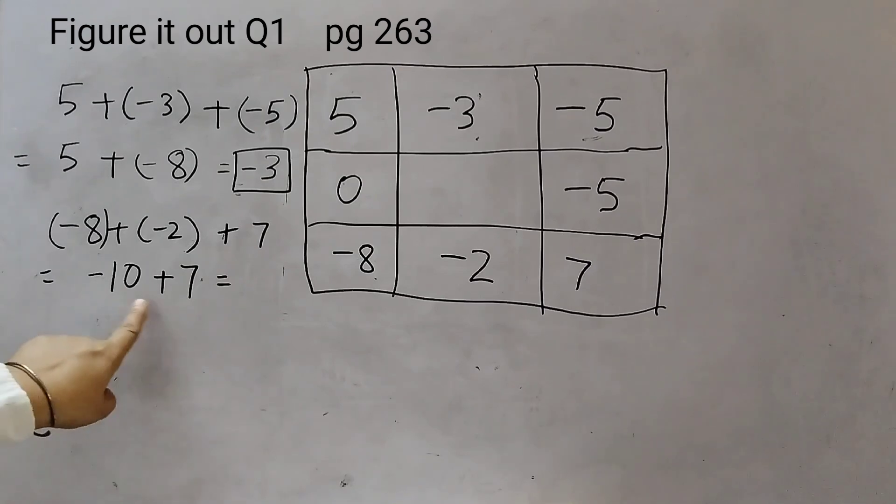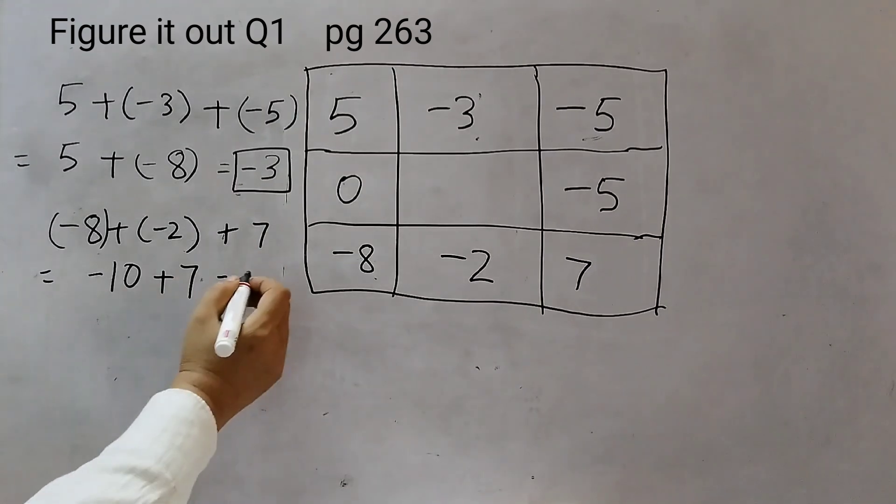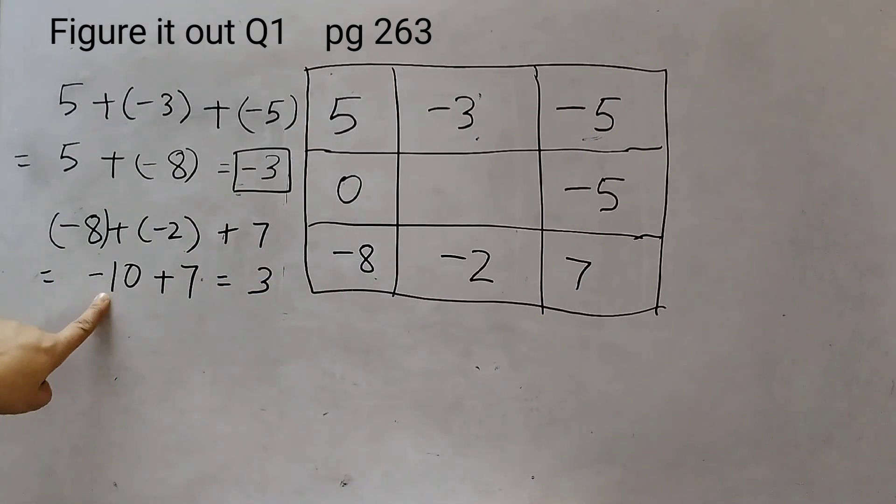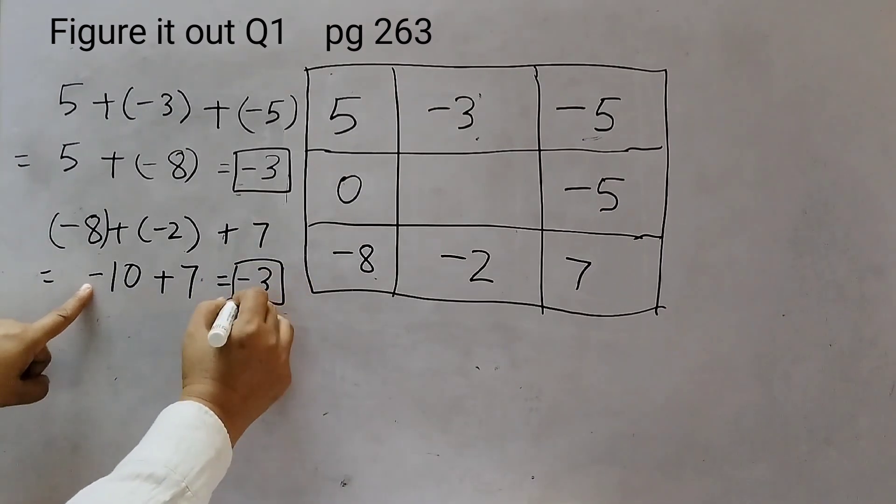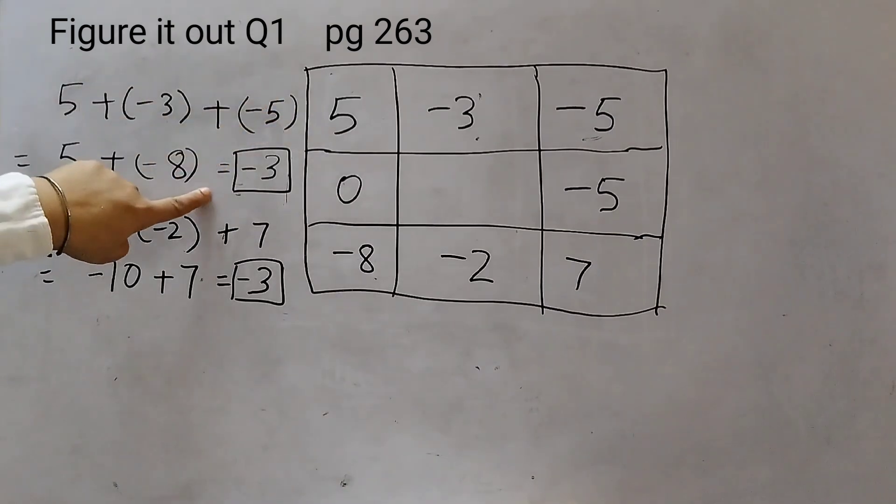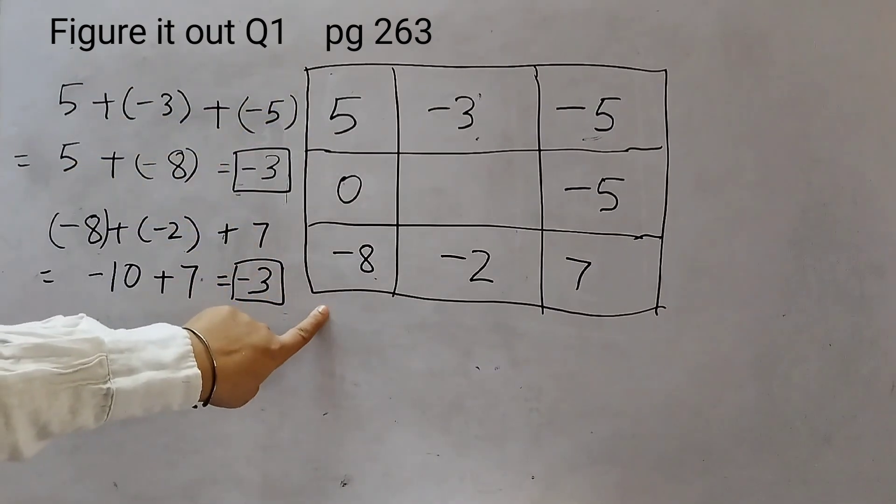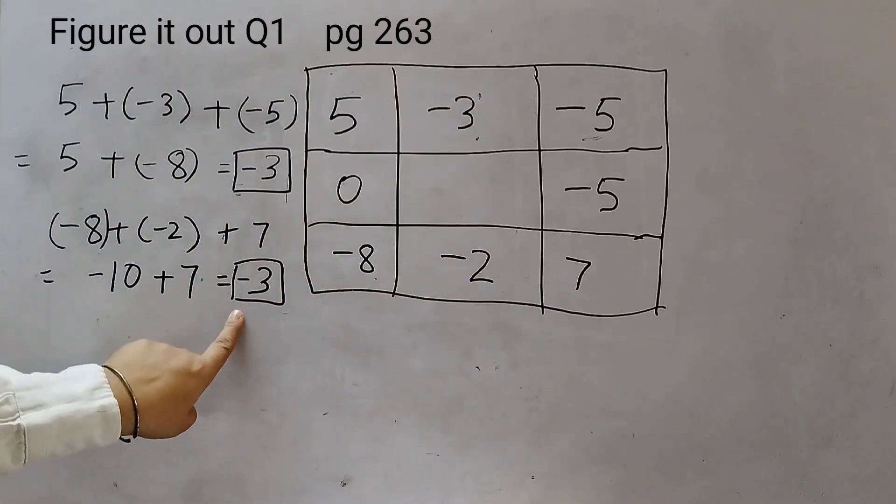Minus 10 plus 7. Opposite signs. Whenever there is opposite sign, you need to subtract. 10 minus 7 is 3. And take the sign of the bigger number. Here, 10 is bigger than 7. So, we will take the minus sign. So, we saw that for the first row, that is the top row, we got minus 3. Even for the bottom row, we got minus 3.